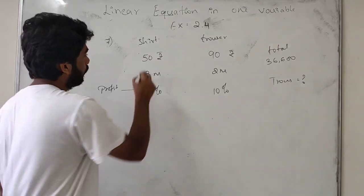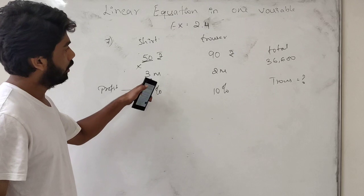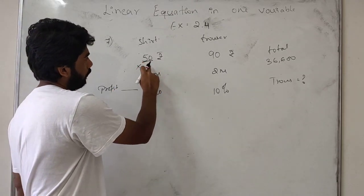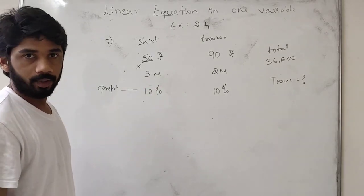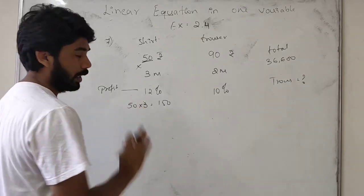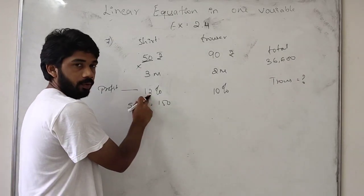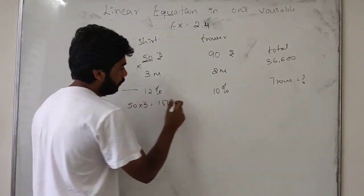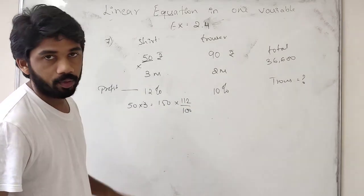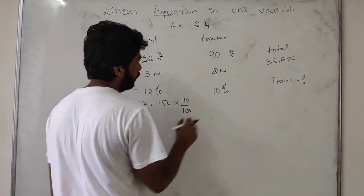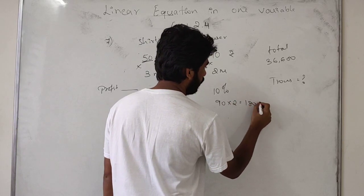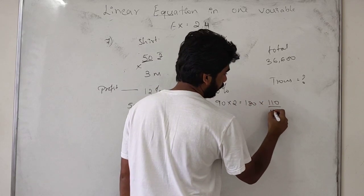So first we have to take the shirt - 50 rupees per meter. We have to multiply by 3 because they are buying 3 meters of shirt. For every 3 meters shirt, for one meter it is 50, for 3 meters we get 150. And then we have to add the profit. We know that if we want to add any profit, we multiply 1.12. Profit means we have to add 100 plus 12 and divide by 100. If it's loss, we have to minus. So what we will get? 150 into 1.12, which gives 168 for shirt material.